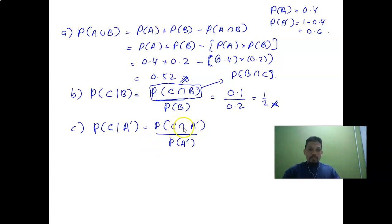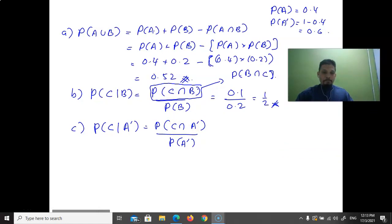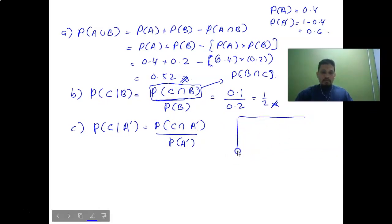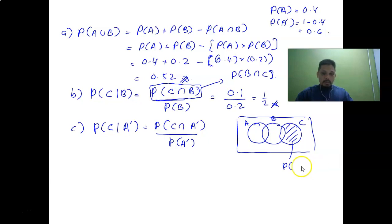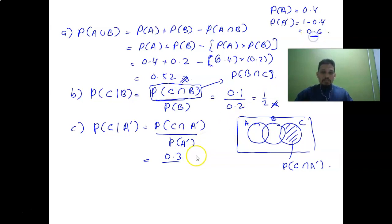From the Venn diagram, considering the area of C intersect A-complement: probability of C intersect A-complement equals 0.3. So the answer is 0.3 divided by 0.6, which equals one over two or 0.5.